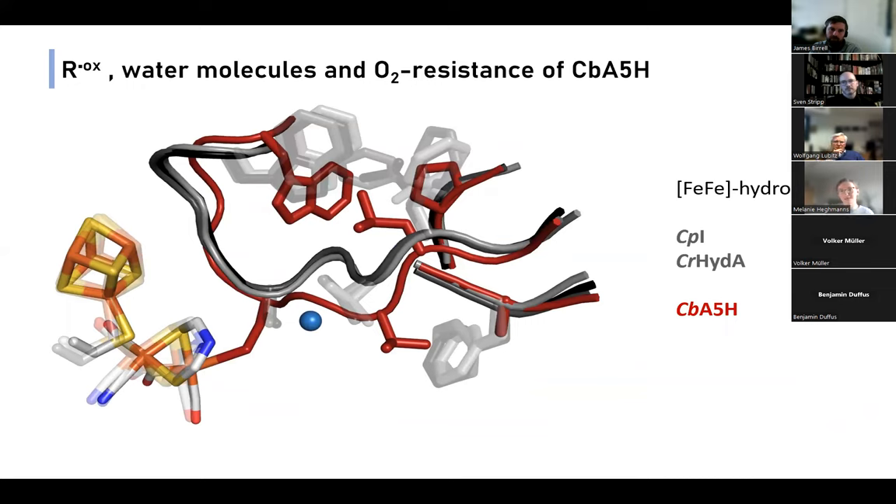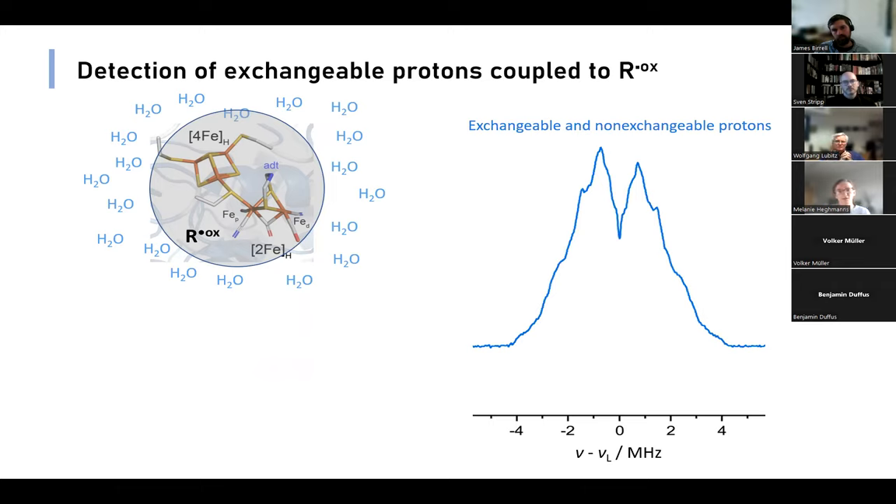At this point, we got one step back and looked at the structures of different hydrogenases, and they also conserved water molecule in the vicinity of the H-cluster. Therefore, we wanted to detect the exchangeable protons coupled to R^ox. For this, we took R^ox in our usual buffer and recorded a proton ENDOR to see the exchangeable and non-exchangeable protons. By exchanging the buffer to deuterium, we can then get a different spectrum that shows us only the exchangeable protons.